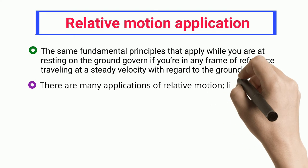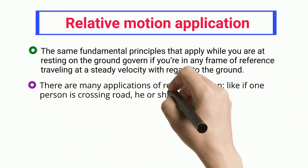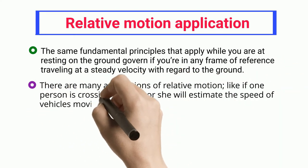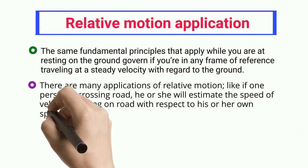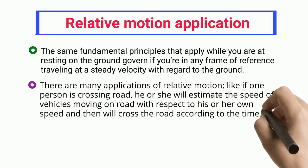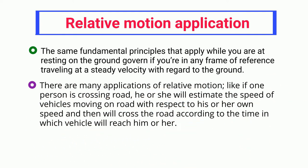There are many applications of relative motion. Like if one person is crossing a road, he or she will estimate the speed of vehicles moving on the road with respect to his or her own speed and then will cross the road according to the time in which the vehicle will reach him or her.